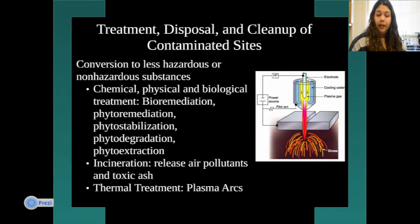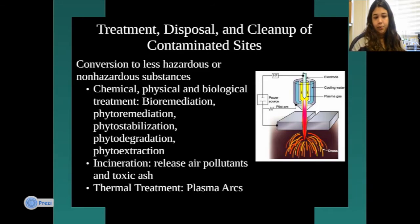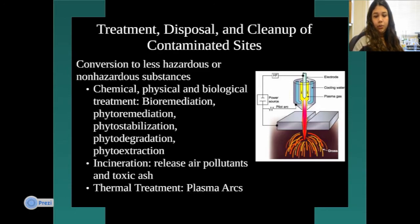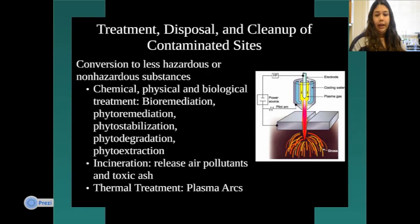Another way to remove these chemicals is incineration — burning them — but this can release air pollutants and produce toxic ash, which is also potentially hazardous. There's also thermal treatment, which uses plasma arcs — as shown in the picture — as another form of thermal processing.